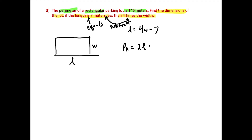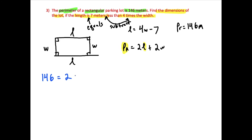The formula for the perimeter of a rectangle is 2 times the length plus 2 times the width, because opposite sides are equal. We know the perimeter is 146 meters, so: 146 = 2L + 2W. We substitute L = 4W − 7 into that equation.